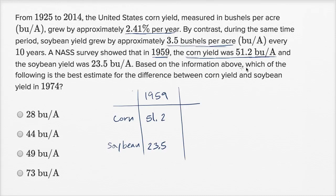Based on the information above, which of the following is the best estimate for the difference between the corn yield and the soybean yield in 1974? So how many years have gone by? Let's see, this is going to be 15 years. So this is going to be plus 15 years from our 1959.